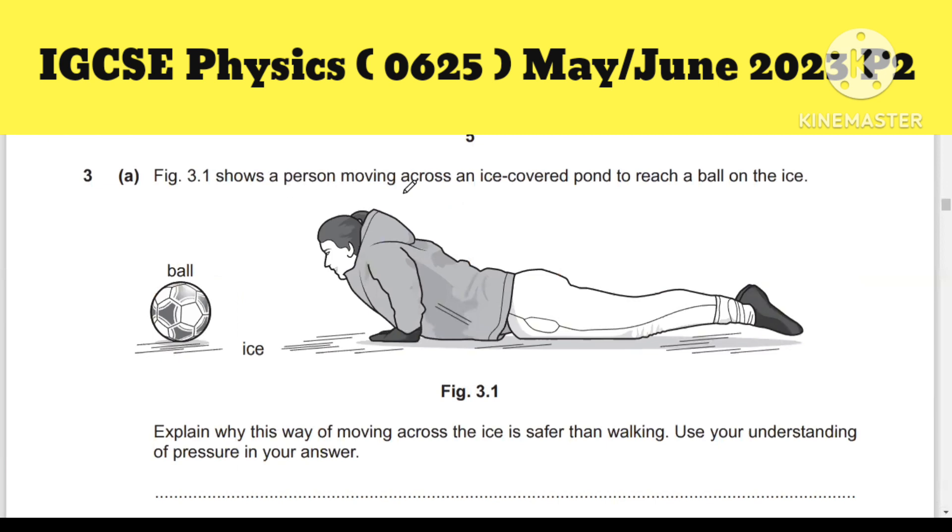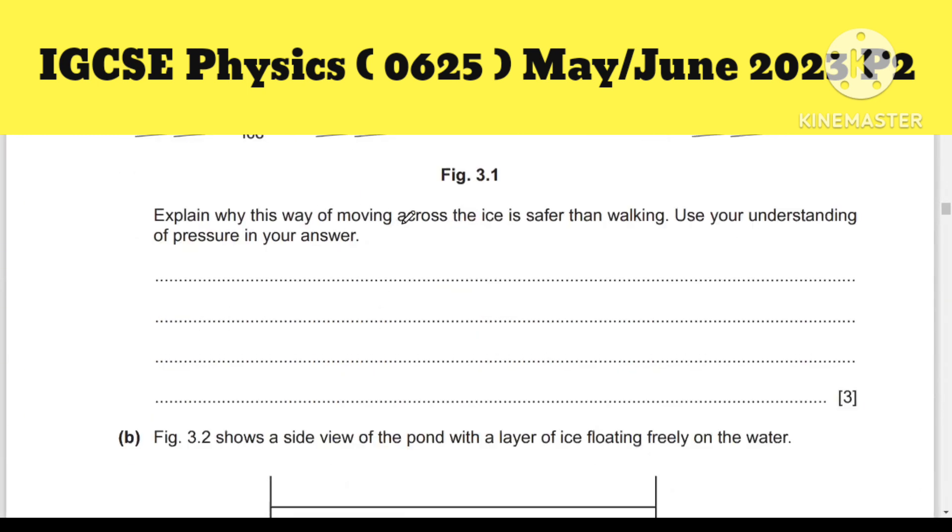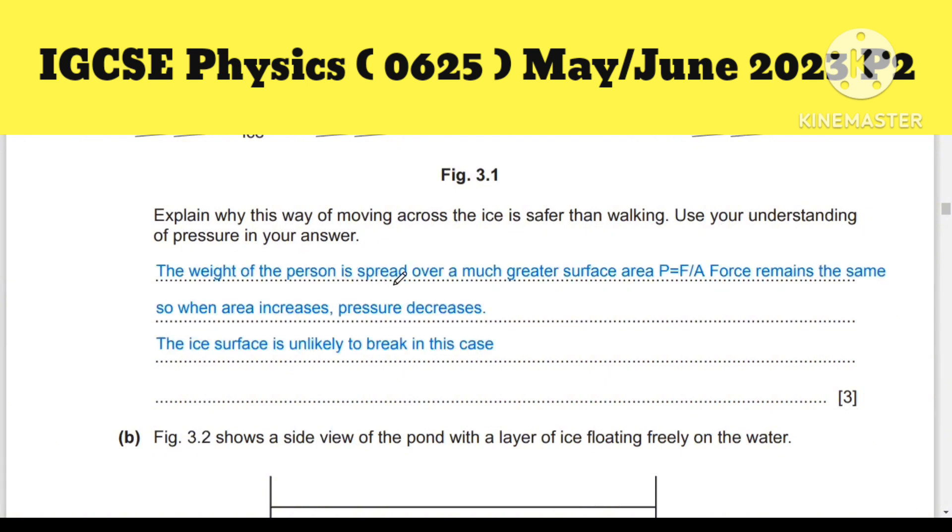Figure 3.1 shows a person moving across an ice-covered pond to reach a ball on the ice. Question: explain why this way of moving across the ice is safer than walking. Use your understanding of pressure in your answer. The weight of a person is spread over a much greater surface area because p = F/A. If force remains the same and area is increased, pressure will decrease, so the ice surface is unlikely to break. You will get three marks.